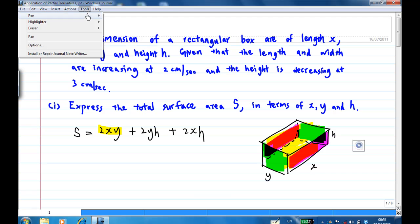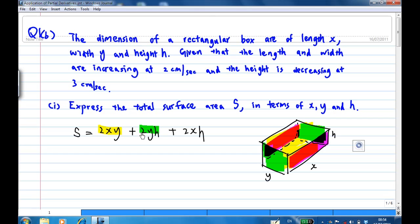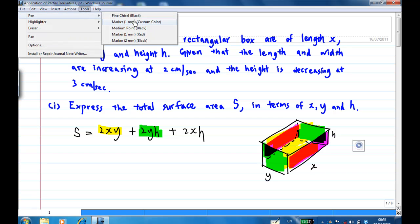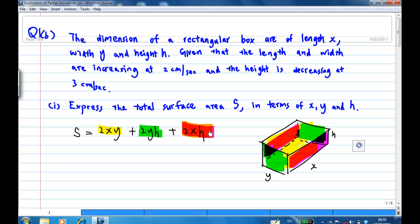And then, there are two side areas which are labeled green, so the area is 2yh each. And then, there are two side surfaces, right? So, this is 2xh each.